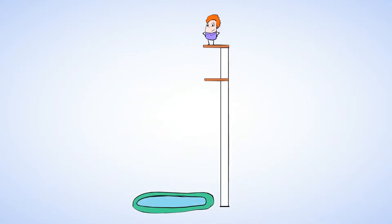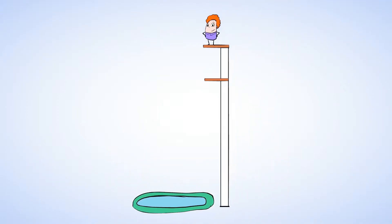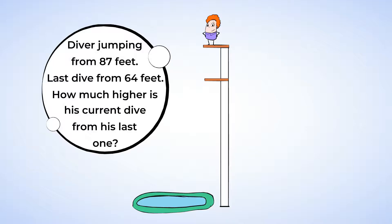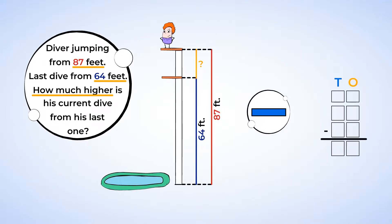And what do we have here? The high diver is attempting to dive into a tiny, tiny pool from a height of 87 feet. Now his last dive was only from a height of 64 feet. How much higher is his current dive from his last one? The question asks, how much higher? So this is a comparison problem. Subtraction again. Now let's set up the equation.